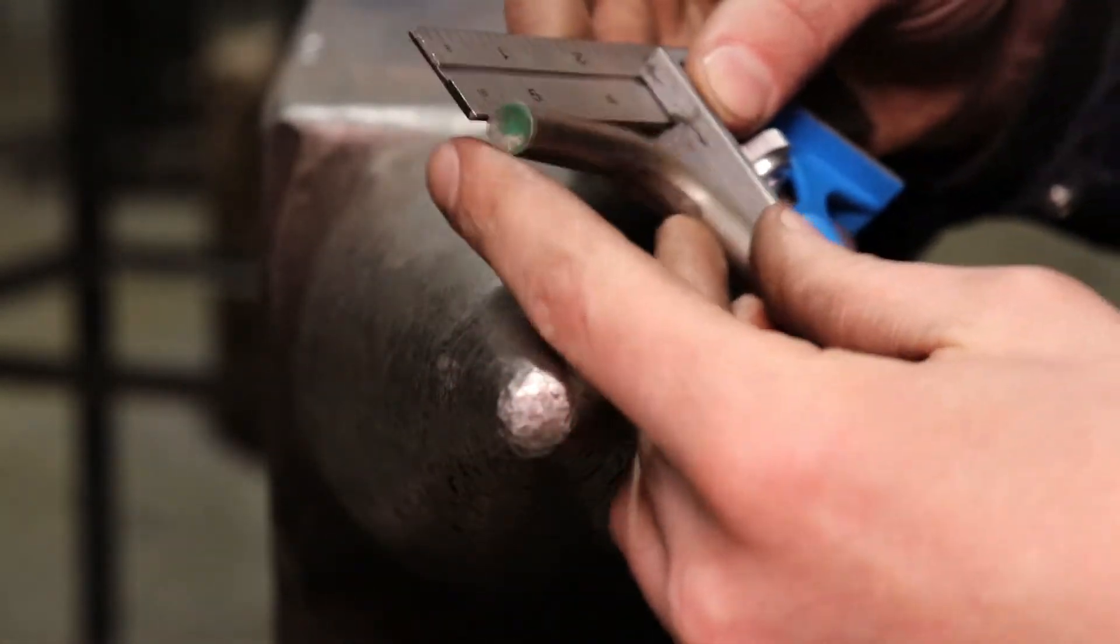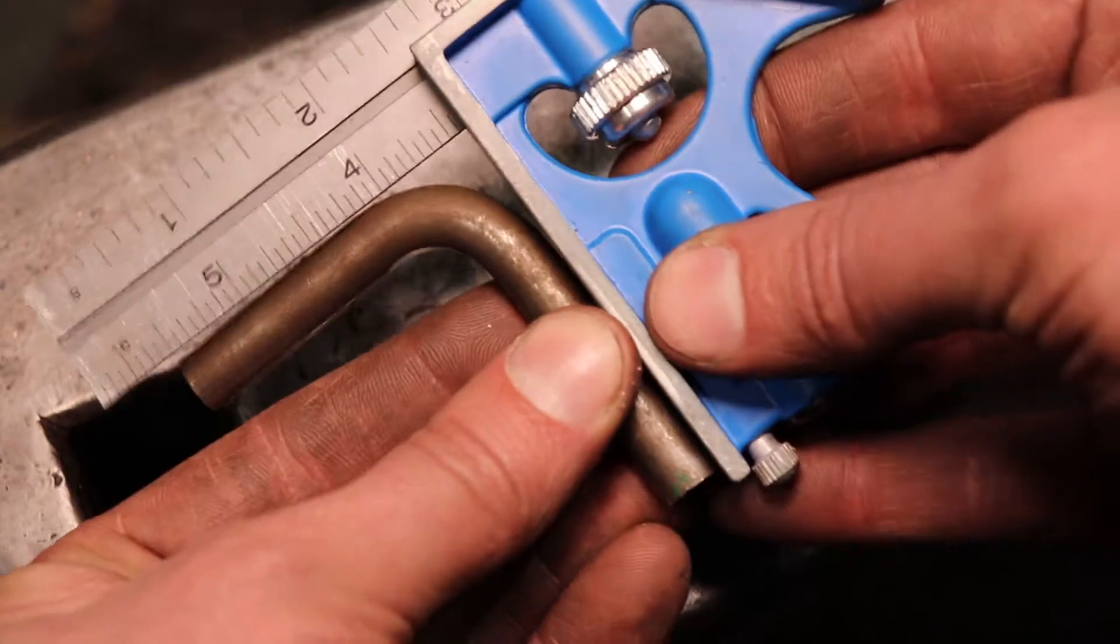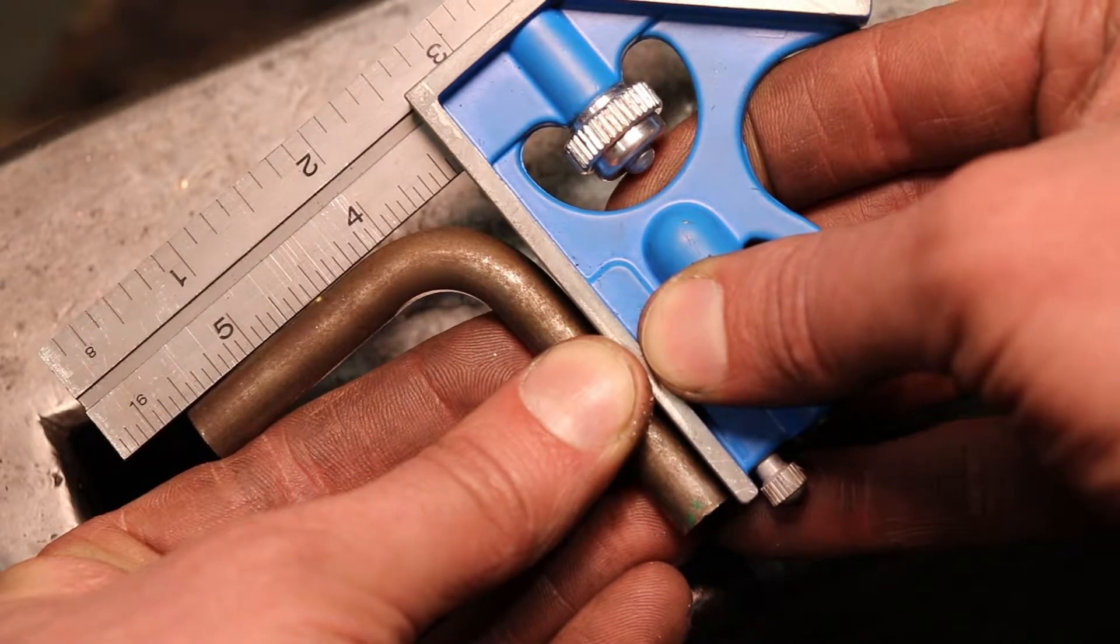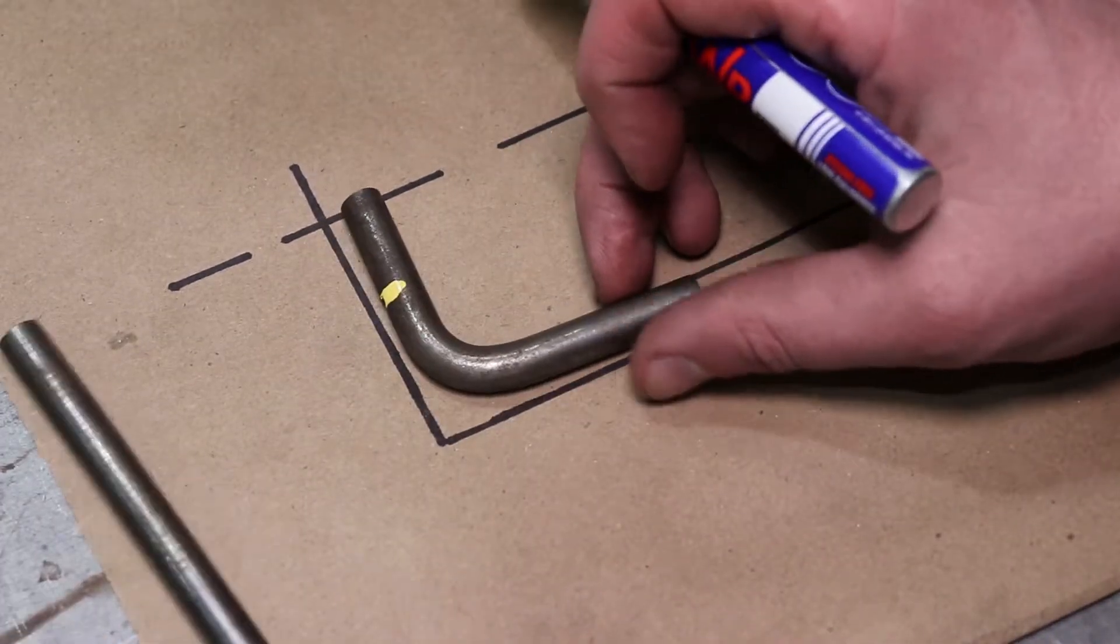So on this round bar, you just kind of put it over the horn of the anvil and give it a good tap here and there. And with a little bit of experience, you'll dial it in. So now it's looking a lot closer to 90, good enough for what I'm doing.